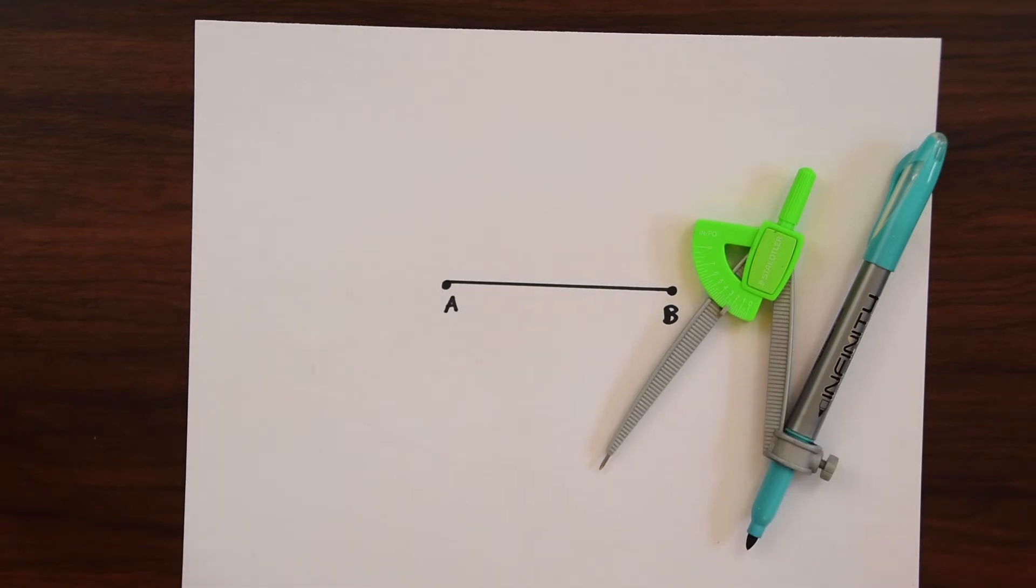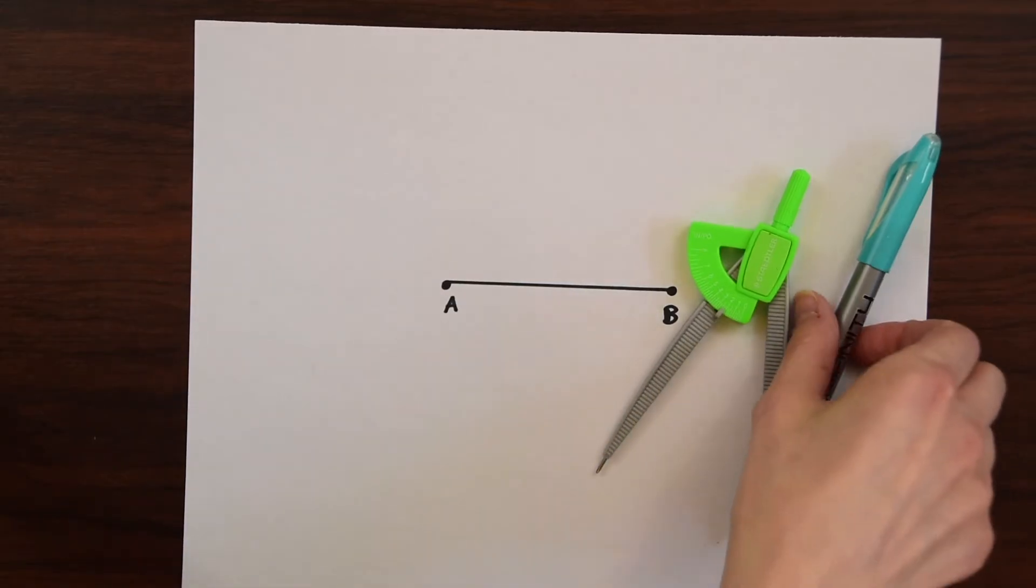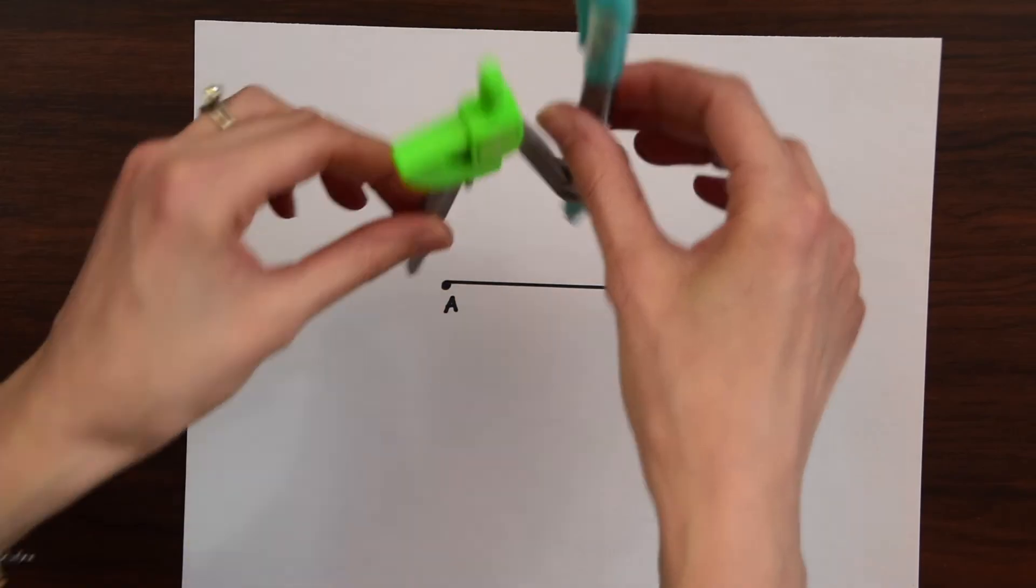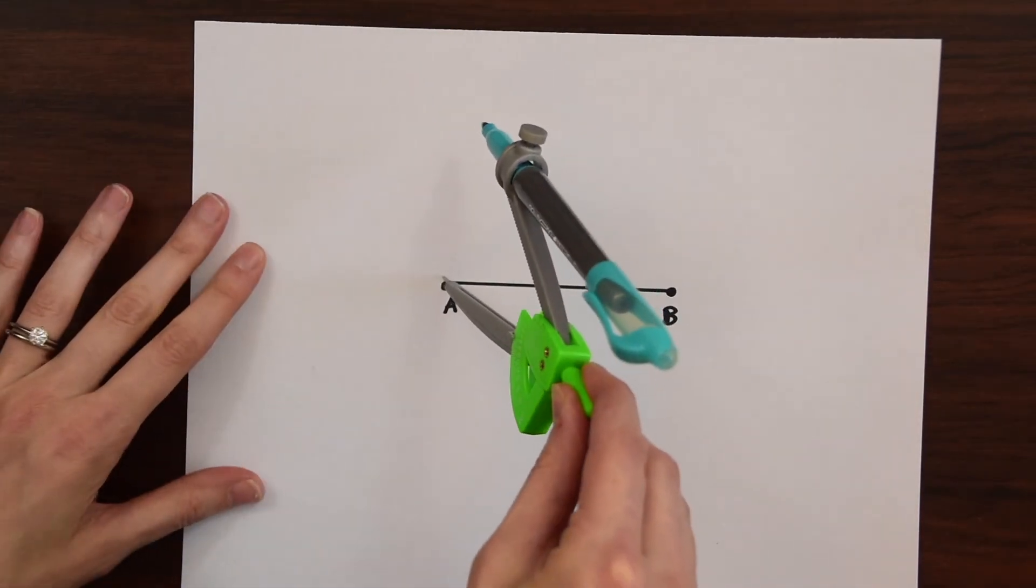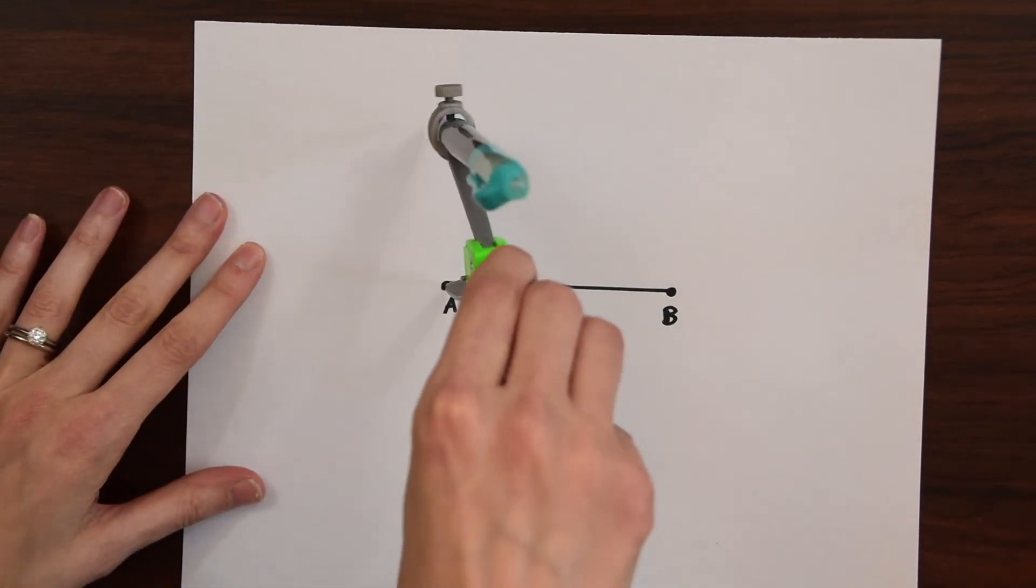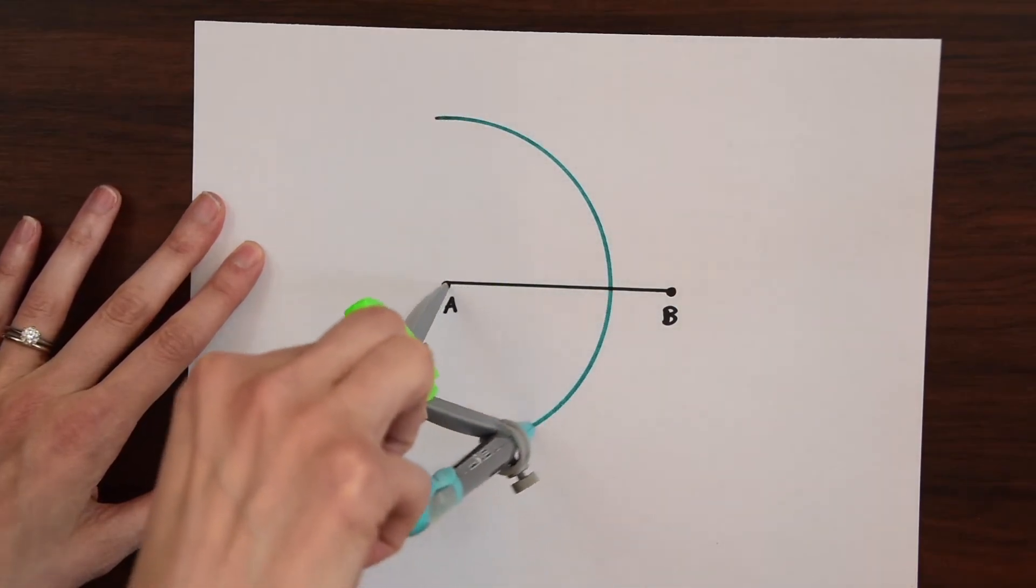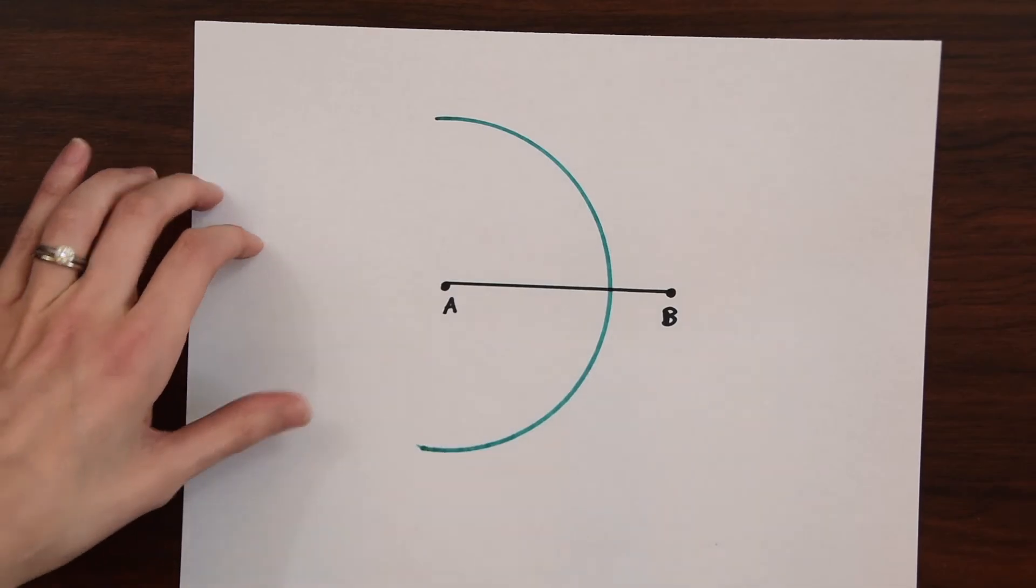So now let's start constructing. We're going to take our compass and just make sure that it's a little more than halfway over the line at least. And then we're just going to take it to one point. So let's take it to point A first and just swing it. We're going to make a semicircle from top to bottom. Just kind of swing it like that.